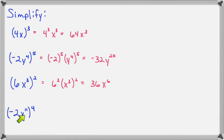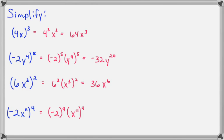Negative 2x to the eleventh all raised to the fourth: we'll do negative 2 to the fourth and x to the eleventh to the fourth. A negative to the fourth power will give us a positive answer — an even number of negative signs gives a positive answer. 2 to the fourth gives us 16. X to the eleventh to the fourth is a power rule setup, so that gives us x to the forty-fourth. And that is how you use the product's two powers rule.